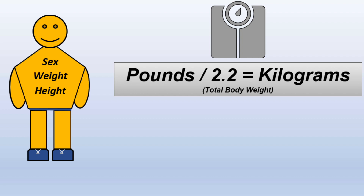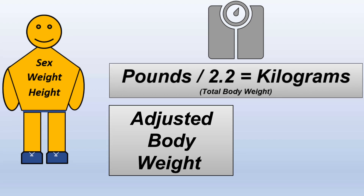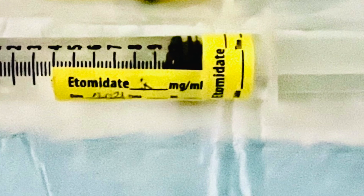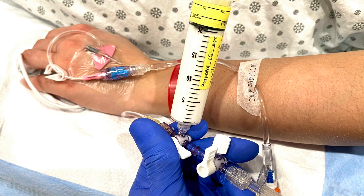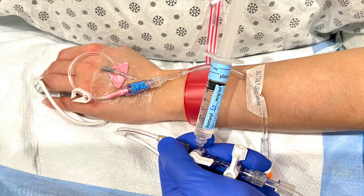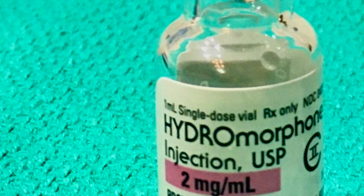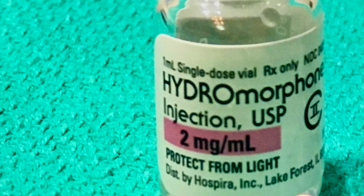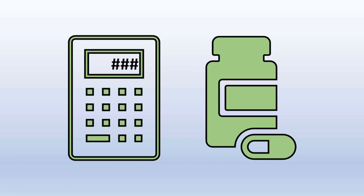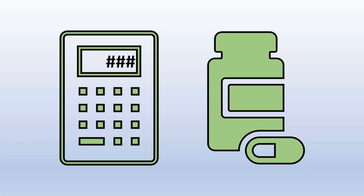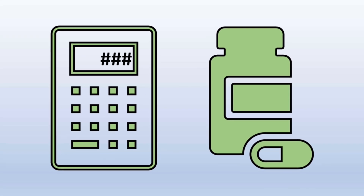For example, we can use your adjusted body weight to give you the right dose of some sedatives like etomidate and propofol, and painkillers like fentanyl, and then we can use your ideal body weight for longer lasting pain medication like morphine and hydromorphone. Overall, giving you medications before, during, and after surgery is a calculated encounter, but understand that not all medications are given to you based on your weight.